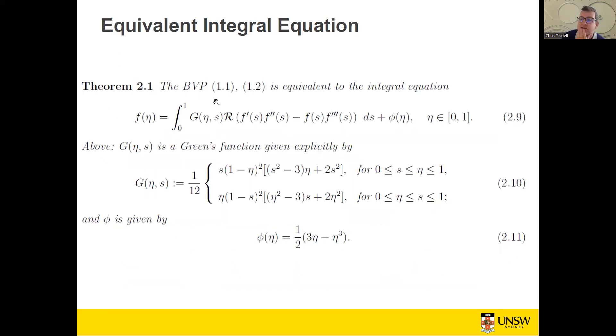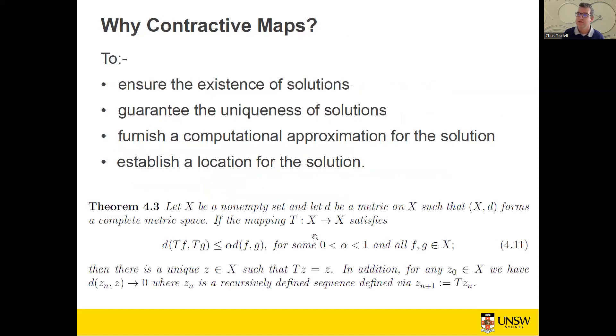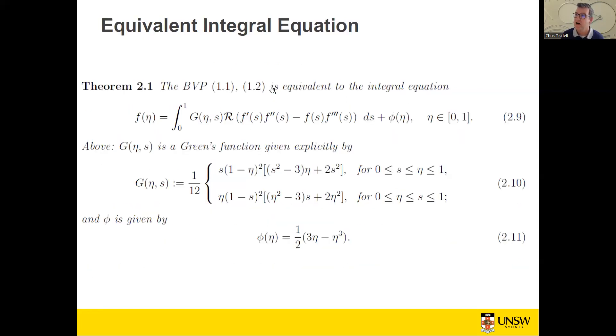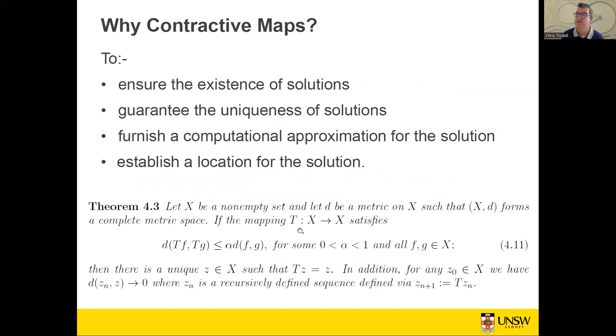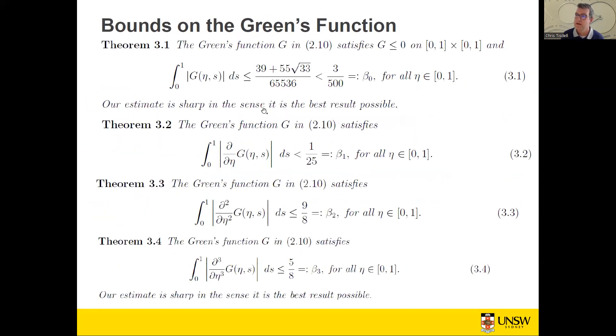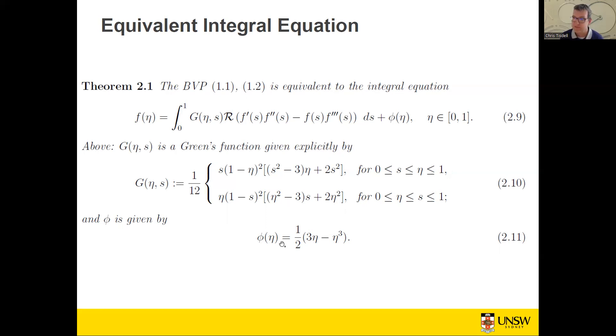Here is the first theorem. The boundary value problem 1.1, 1.2 is equivalent to the following integral equation. Basically if F solves this, then it solves the equation 1.1, 1.2. And if F solves 1.1, 1.2, then it solves 2.9. This G is a Green's function and the phi is an interesting one. That's actually a solution to this problem when the Reynolds number is zero. So when there's no suction or injection, the phi here is a special function. It's kind of like a solution to the homogeneous problem. If you set calligraphic R equals zero and solve this problem, you would get this function here.